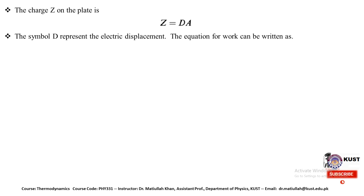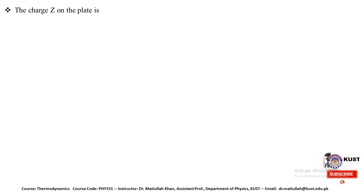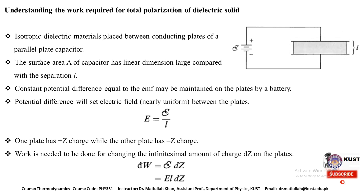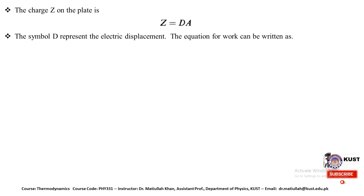The charge Z on the plates of the capacitor is Z equal to D·A, where D represents the electric displacement caused due to the application of external potential difference and A is the area of the plates. We need to replace DZ in the work equation DW equal to E·L·DZ using the equation Z equal to D·A, so DZ equal to A·dD. The work equation then becomes DW equal to A·L·E·dD.